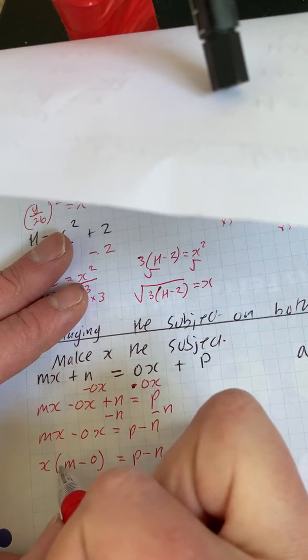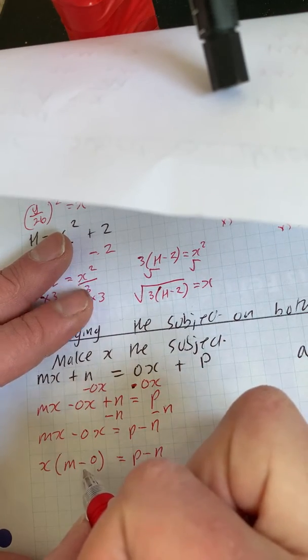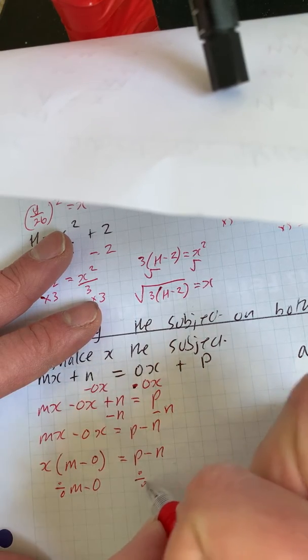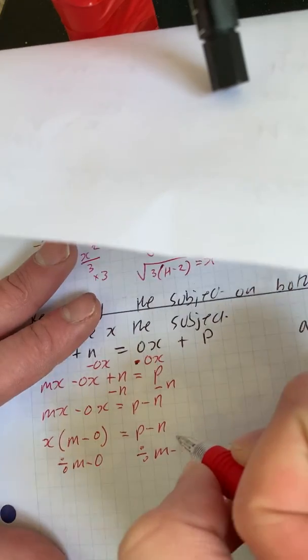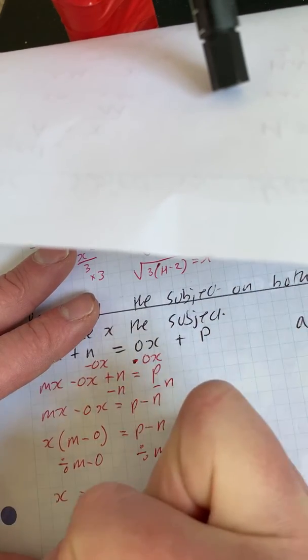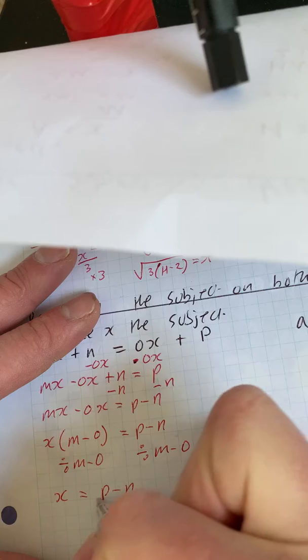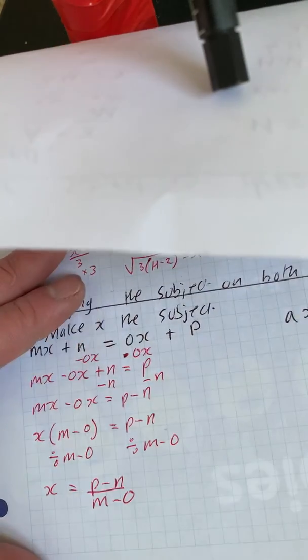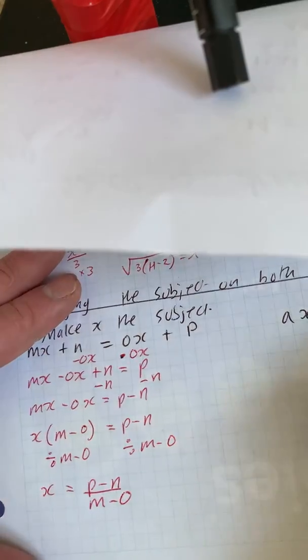Now what this means is x times all of this, so the opposite of that is dividing, so we need to divide both sides by m minus o. So we've got x is equal to p minus n over m minus o. So we always have to do that step of factorising.